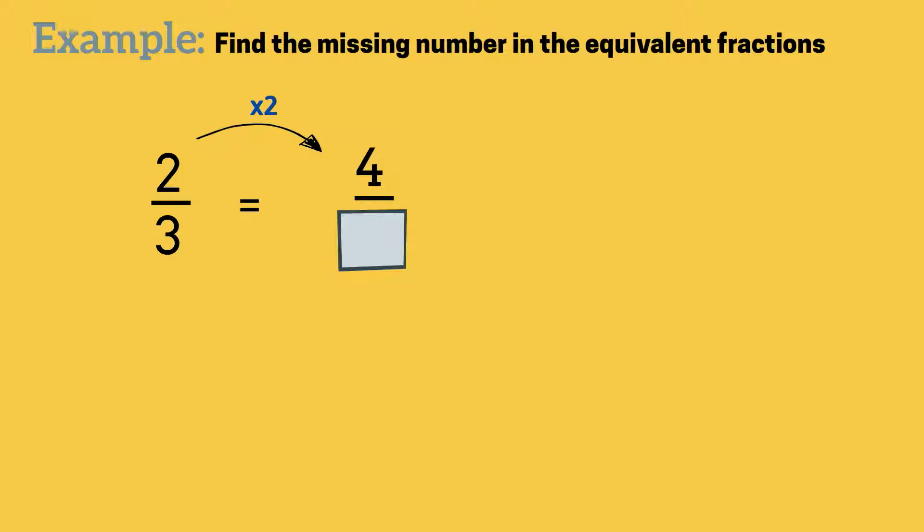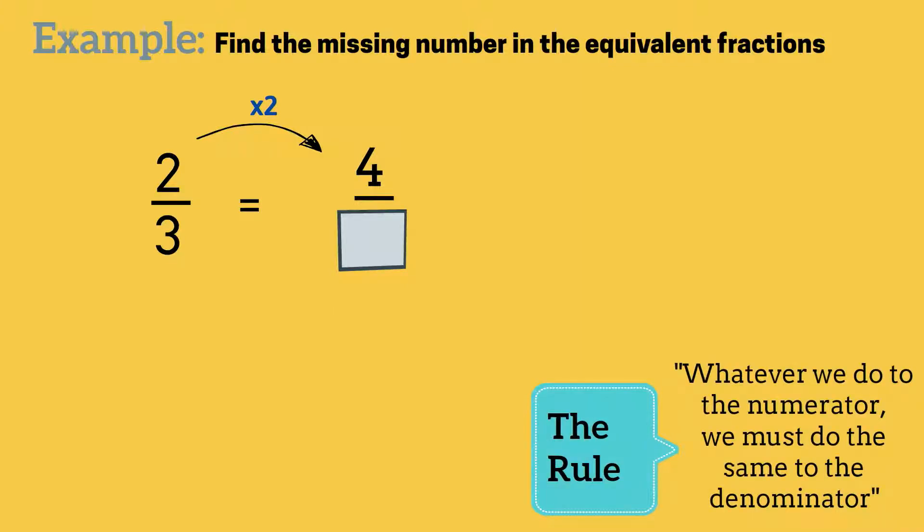Remember our rule, we must do the same thing to the top and bottom numbers. So if 2 is being multiplied by 2 to give 4, then we must multiply 3 by 2 to give 6. So the missing number is 6. 2 thirds equals 4 sixths.